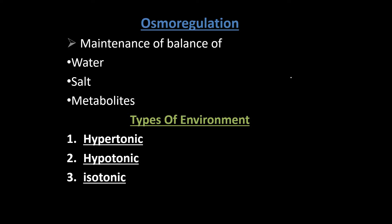Today we will see what osmoregulation is and what is the process of osmoregulation in plants. Osmoregulation is the maintenance of balance of water, salt, and metabolites.